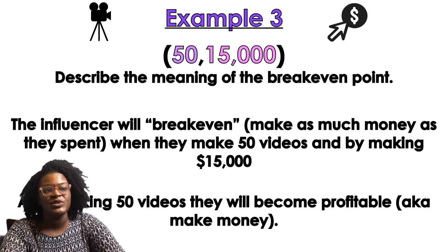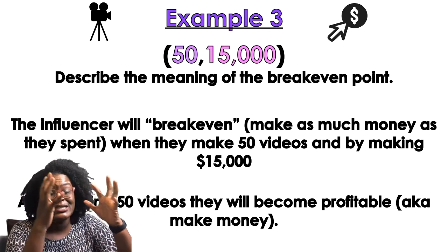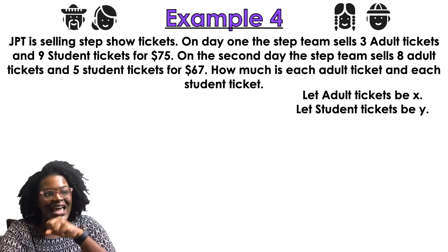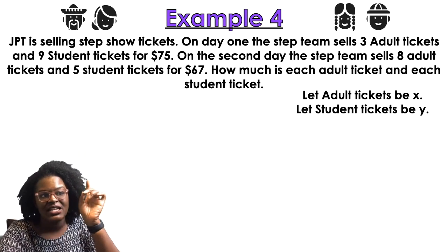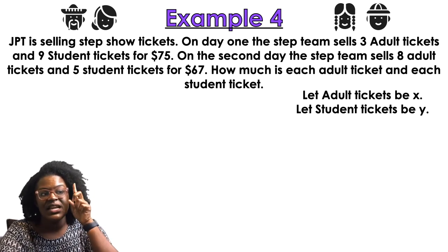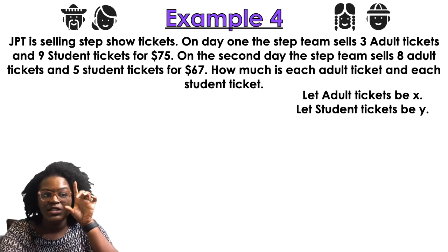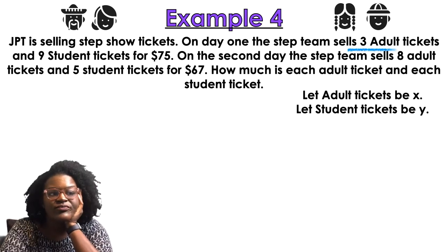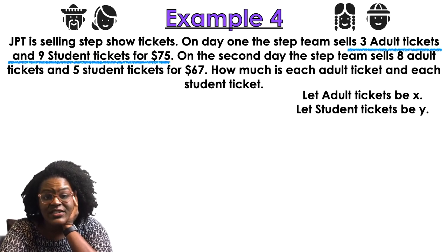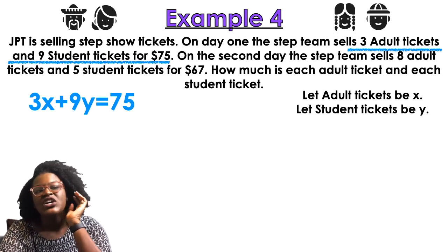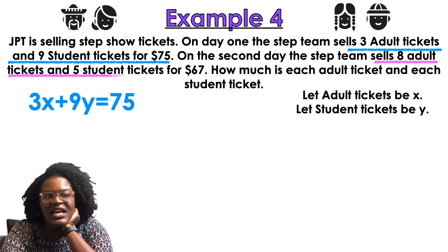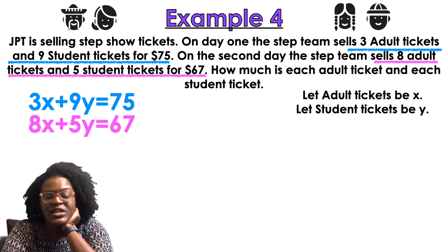Example number four — we're switching gears. Systems don't just come in break-even format. JPT is selling step show tickets. On day one, the step team sells three adult tickets and nine student tickets for $75. On the second day, they sell eight adult tickets and five student tickets for a total of $67. Let adult tickets be X and student tickets be Y. That gives us: 3x + 9y = 75, and 8x + 5y = 67.